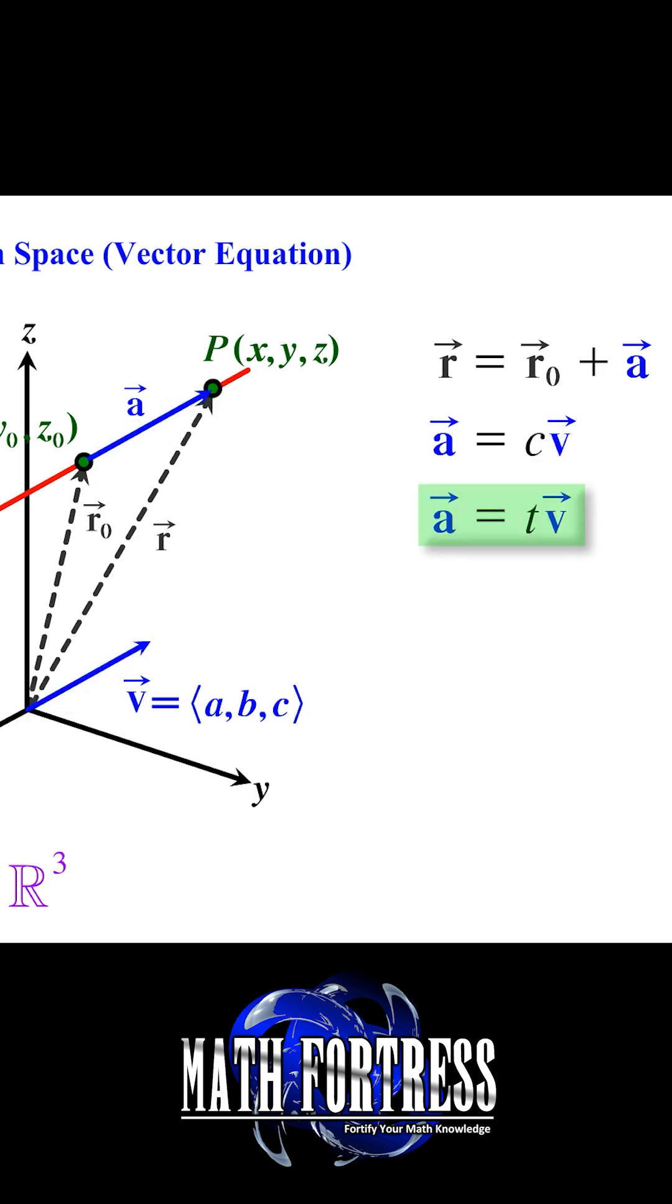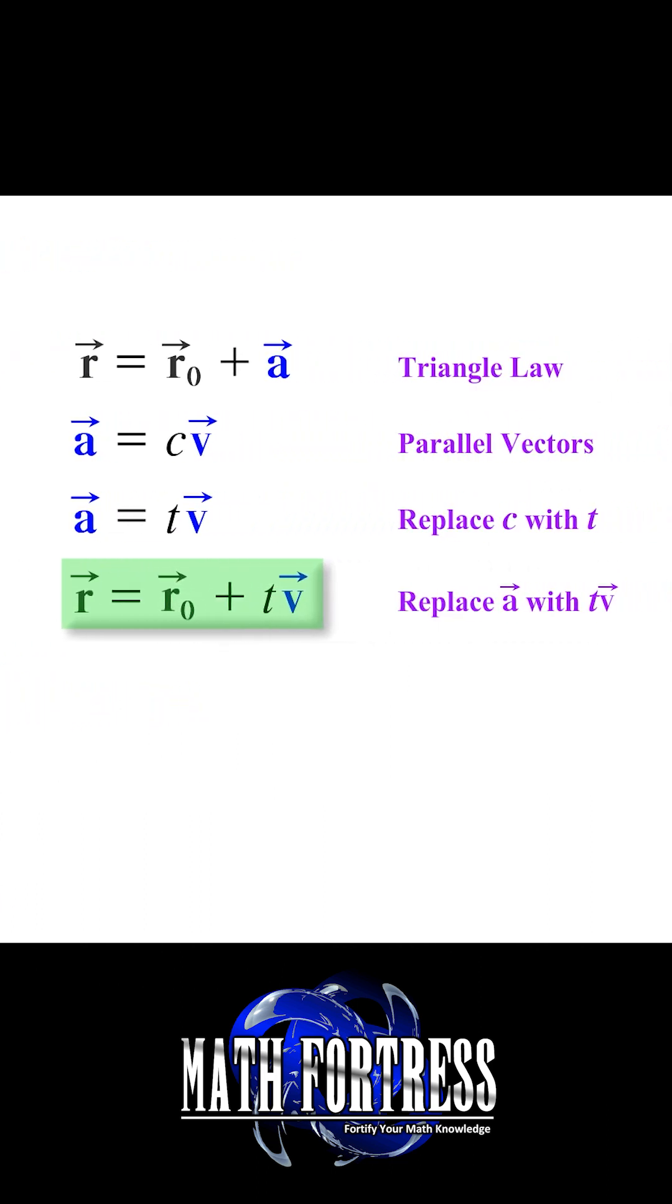This expression for vector A can now be substituted into the vector expression for vector R. Doing that, we obtain the following. This is called the vector form of the equation of a line.